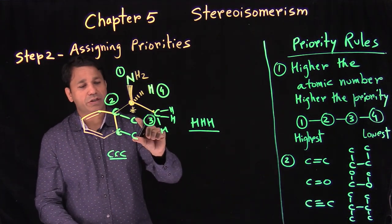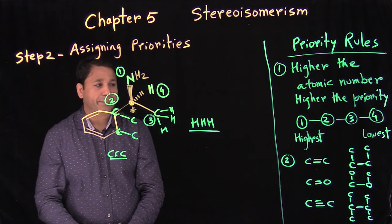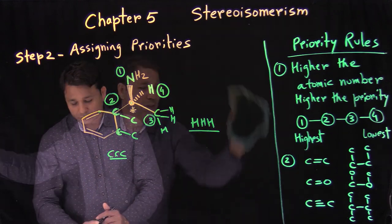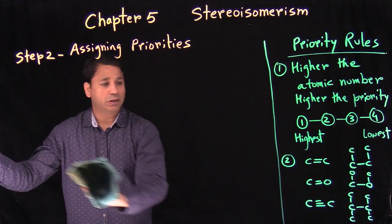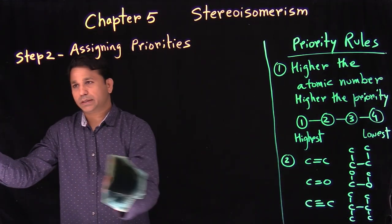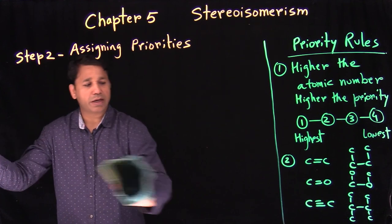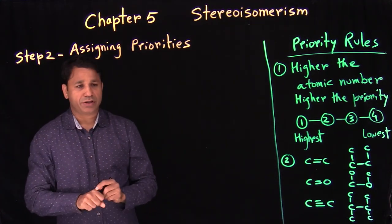When it comes to a double bond, triple bond, or carbon-oxygen double bond, you split it or count it twice — either way you see it. Let's do a couple of examples with a ring. When you have a ring, how do you handle the situation?